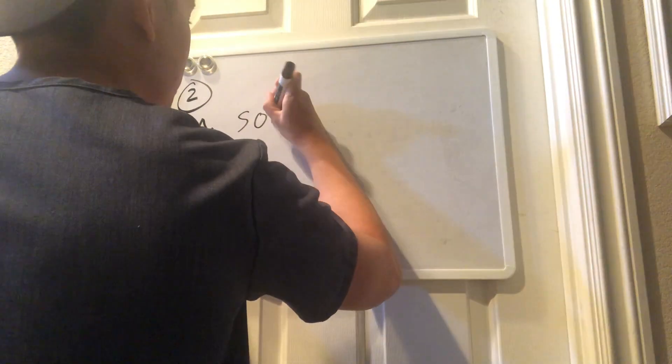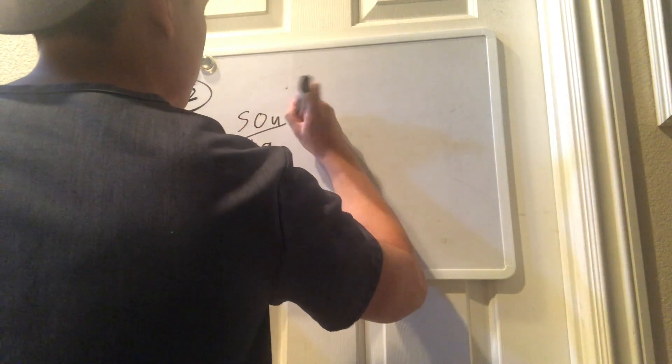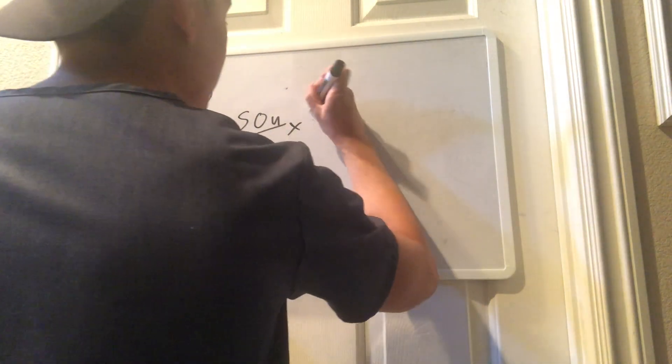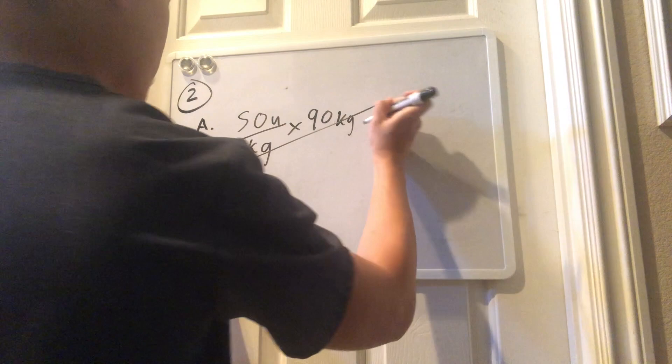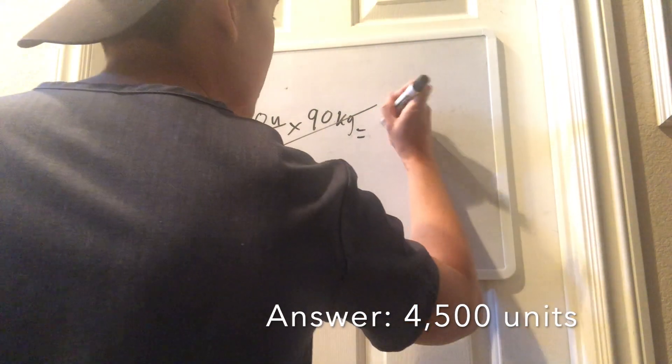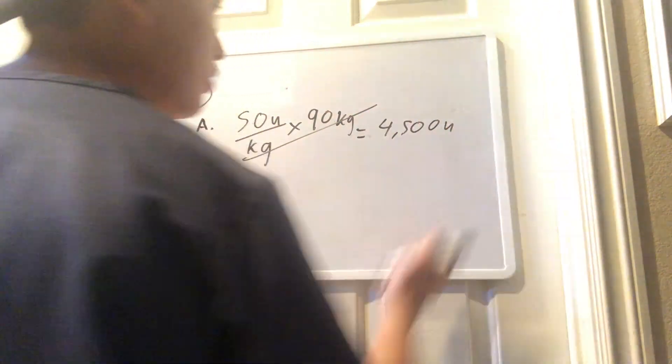you take the 50-unit bolus per kilogram, you take the weight, which is 90 kilograms, cross off the kilograms, and you're left with 4,500 units.